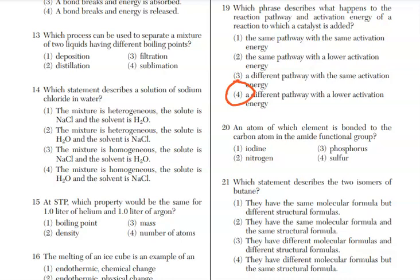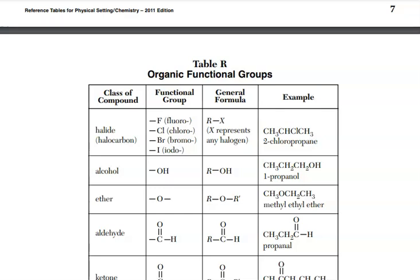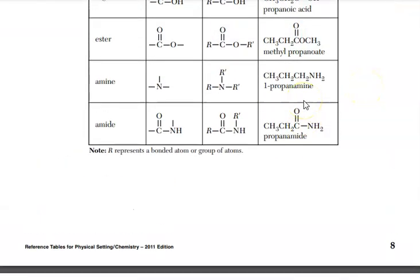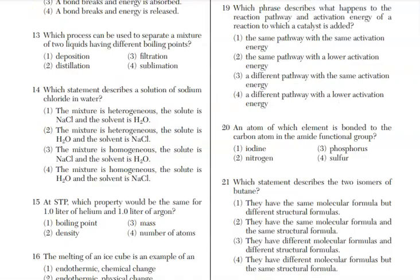For question 20, an atom of which element is bonded to the carbon atom in the amide functional group? Do not guess. Go to the reference tables and let's check it out. Amide is a functional group, organic. They are carbon-containing compounds. Here on reference table R, we just keep scrolling down and we're looking for amide. Didn't say amine, it said amide. So amide has an oxygen and a nitrogen. So let's go back and take a look. We said an oxygen or a nitrogen and we have nitrogen as choice 2. That's the answer for question 20.